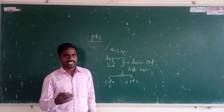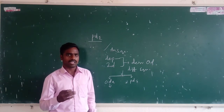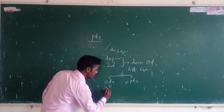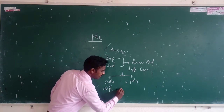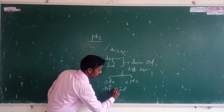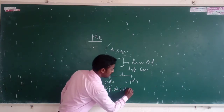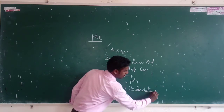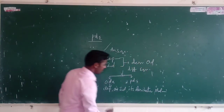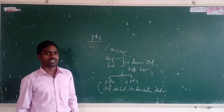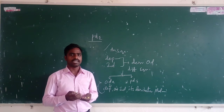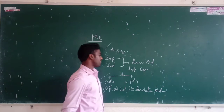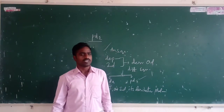A differential equation contains a dependent variable and one independent variable with its derivative parts. With only one independent variable and its derivatives up to a certain order, it is called an ordinary differential equation. One independent variable with dependent variable and derivative parts — the equation is called an ordinary differential equation.